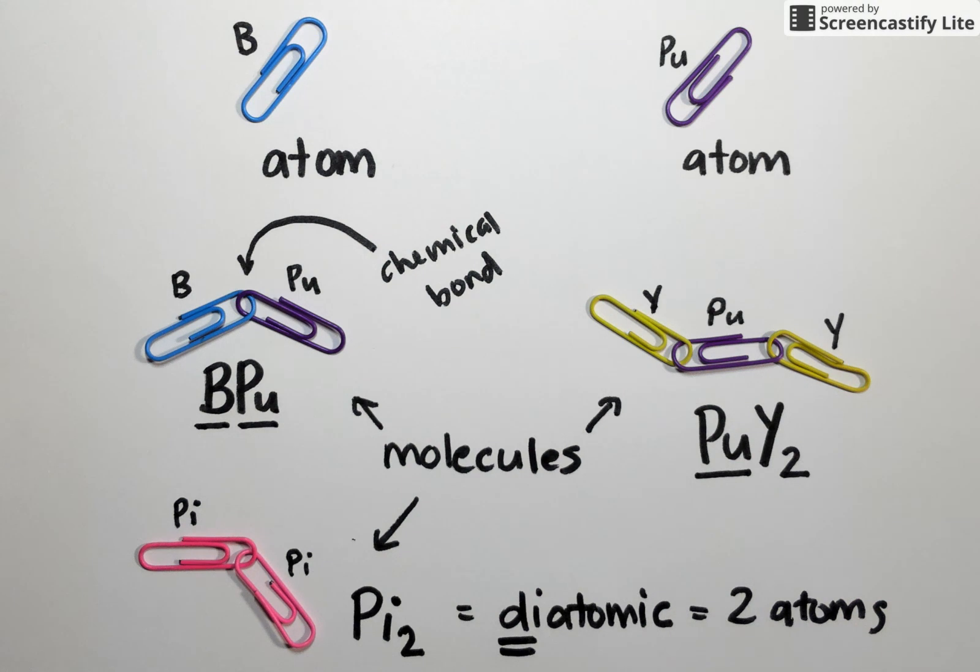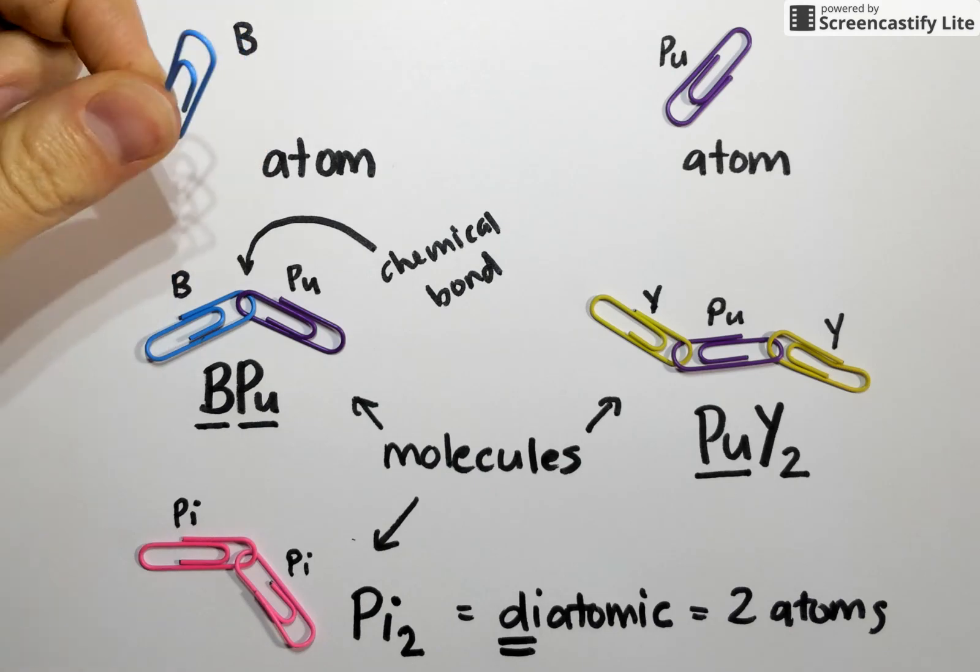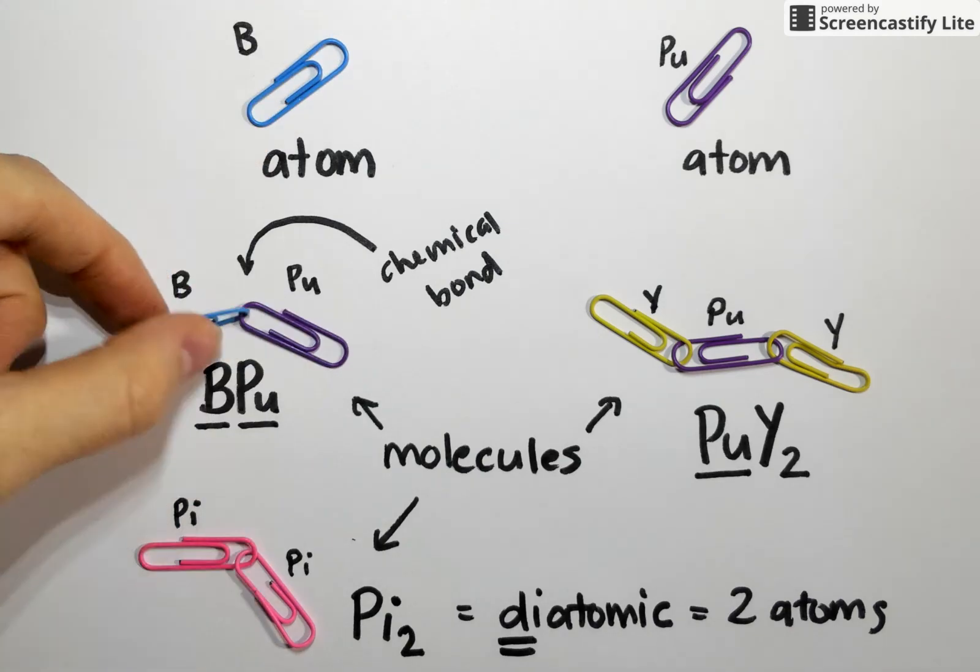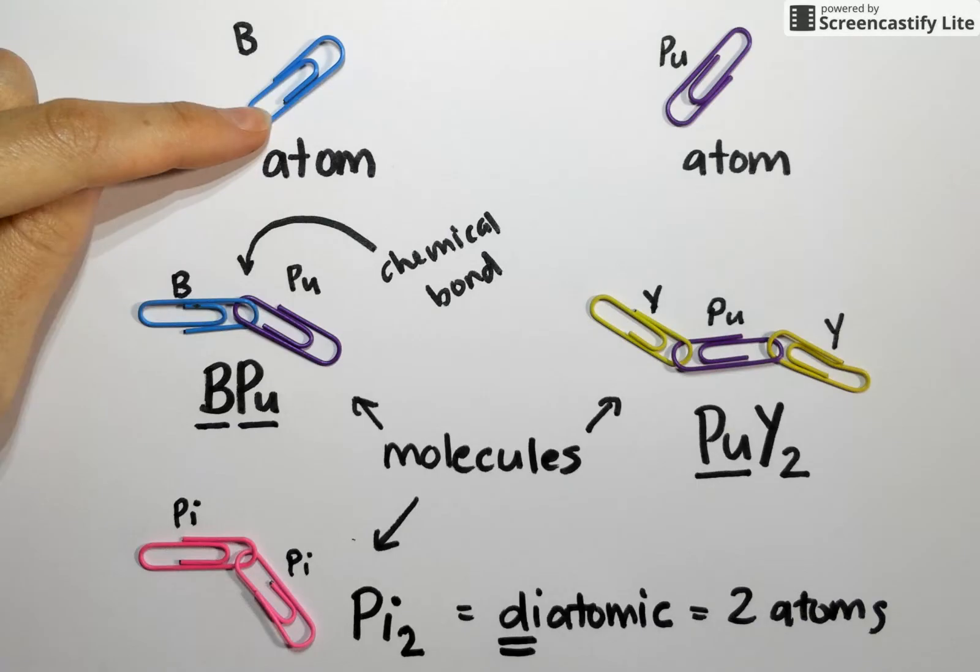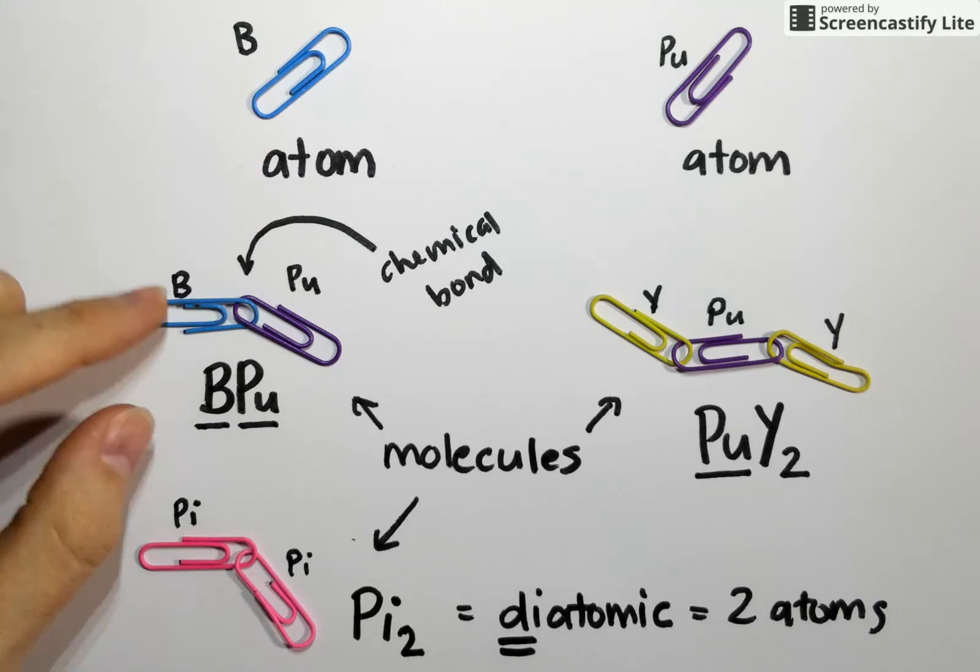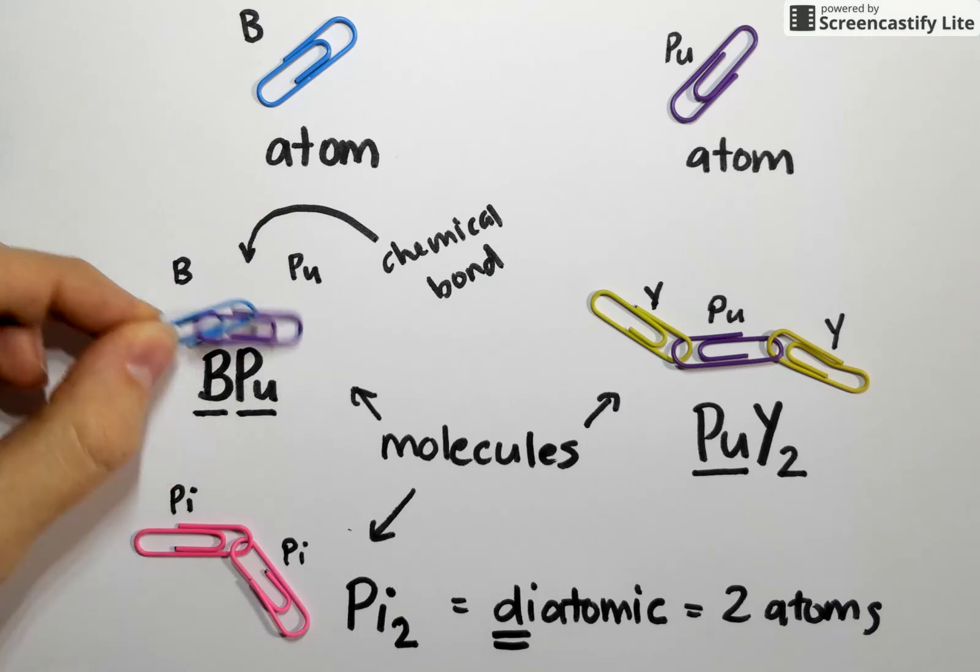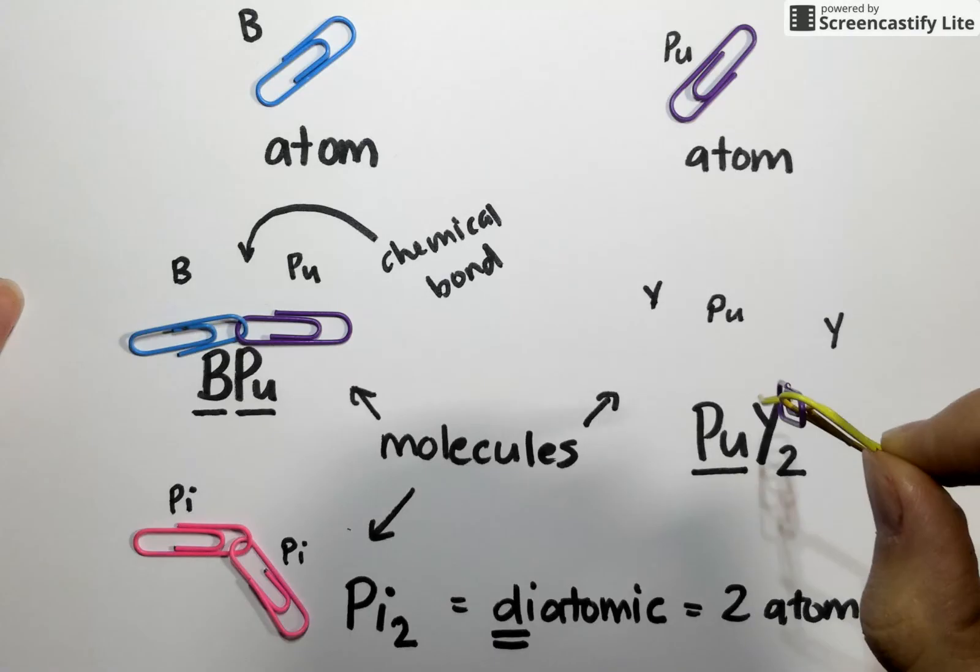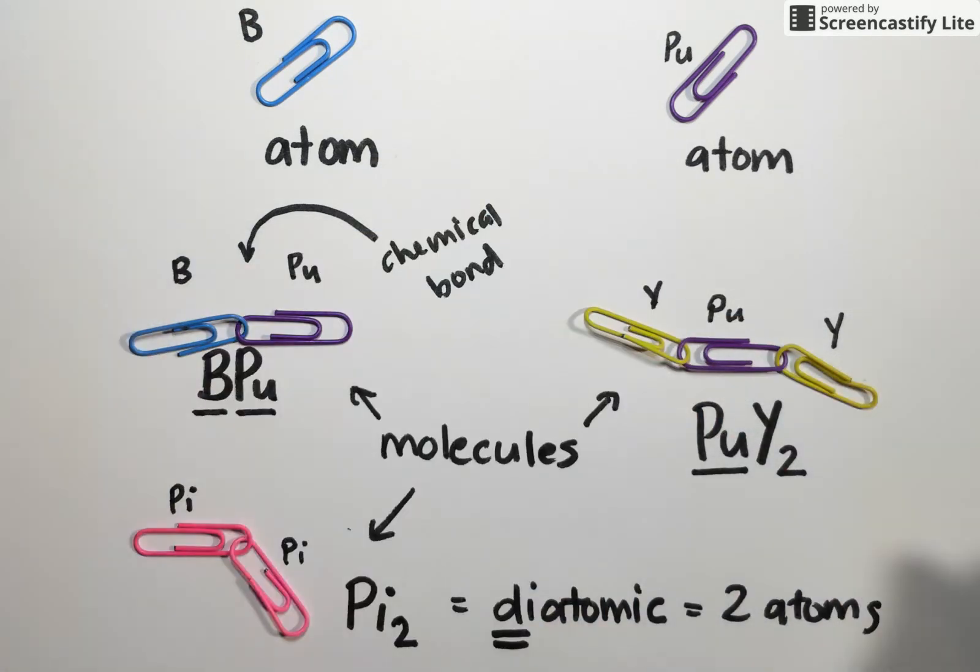A few people get thrown off by the idea of generalizing and starting to use the term particle. Particles can describe groups of atoms or individual atoms. You can think of it like this: if I were to pick these atoms up, whenever I pick something up, it and everything that comes with it is a particle. So up top, this individual atom of B is a particle. But here, this whole molecule of BPU is a particle. Over on this side, this whole molecule of PUY2 is a particle because those atoms are chemically linked and have to be treated as a group.